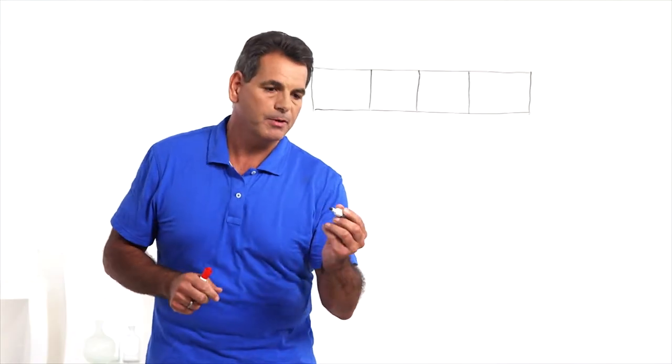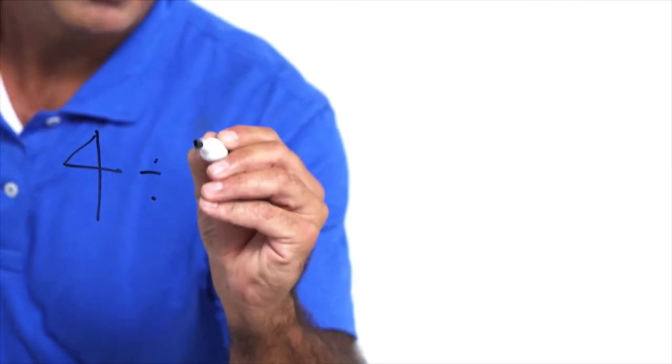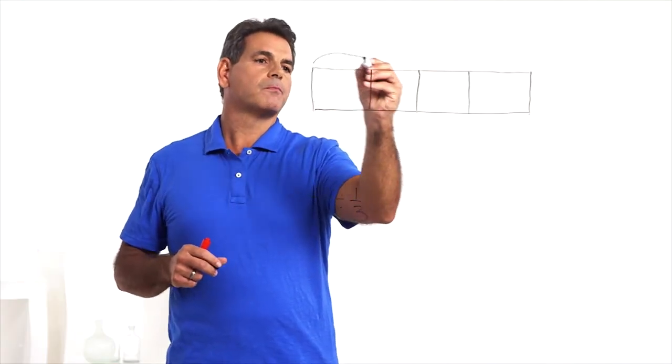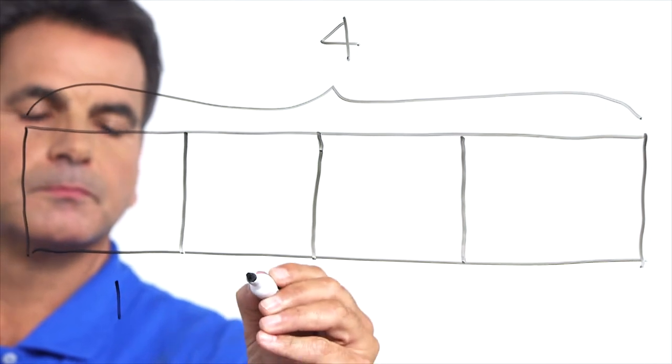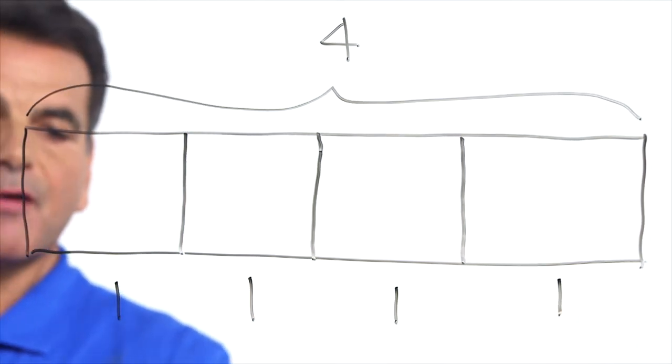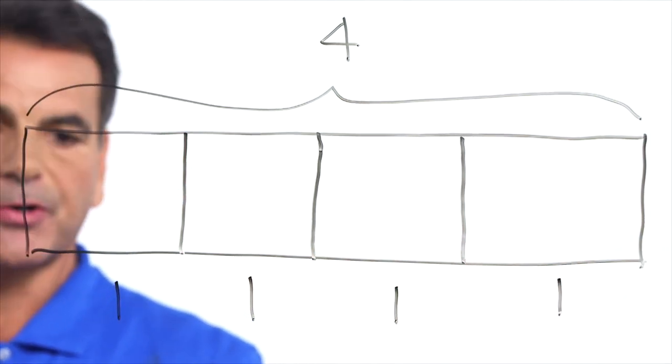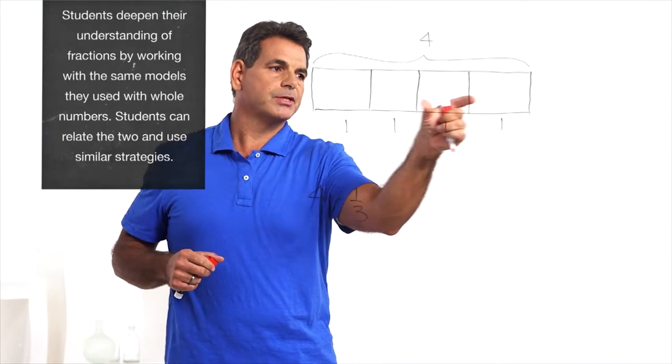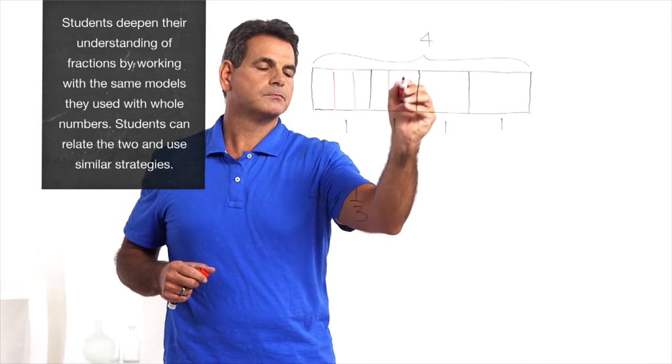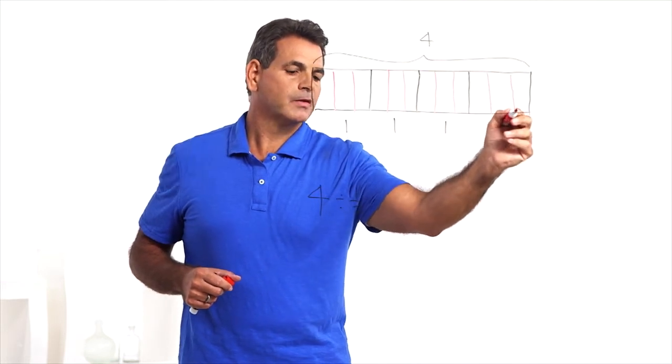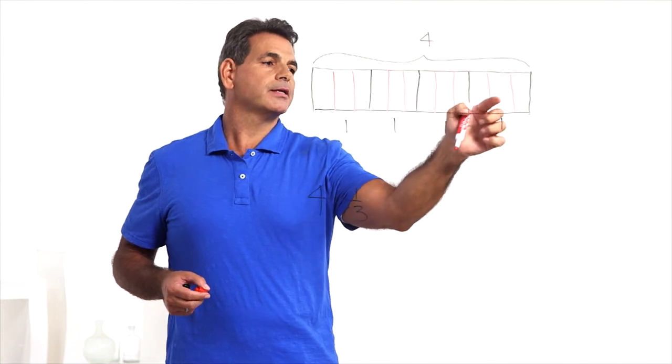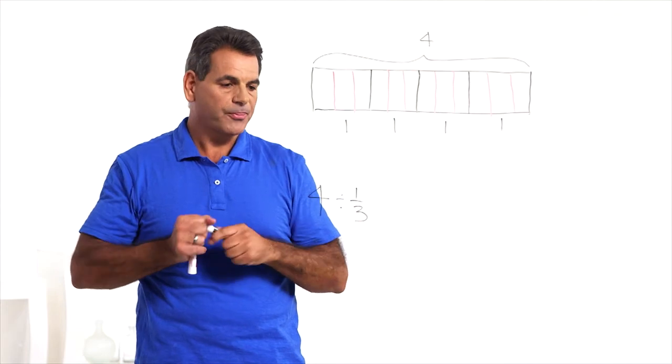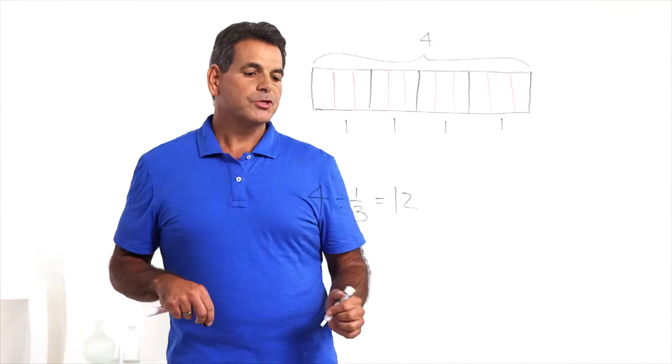Let's use a bar model to examine division of a whole number by a unit fraction. Let's use the problem four divided by one-third. This bar model represents four, which means each of these is one. Now that we have wholes, we can divide those into thirds. We're going to divide each section into thirds. Now we can see how many thirds are in four. 1, 2, 3, 4, 5, 6, 7, 8, 9, 10, 11, 12. So that means four divided by one-third equals twelve. So there's twelve one-thirds in four.